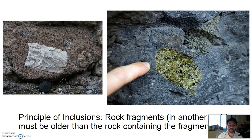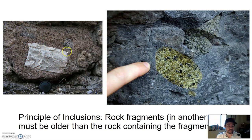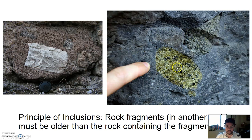Another principle is the principle of inclusions. Rock fragments in another rock must be older than the rock containing the fragments. A rock fragment had to exist first before it could get encased in the other rock, and a rock or mineral had to exist first before other material cooled or formed around it. So the inclusion is older and the surrounding rock is younger.